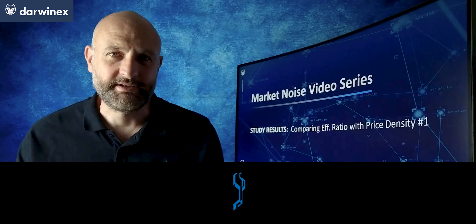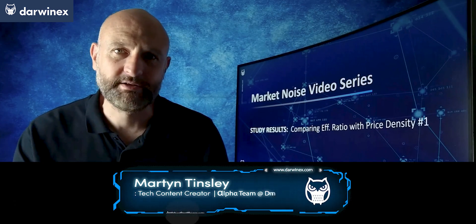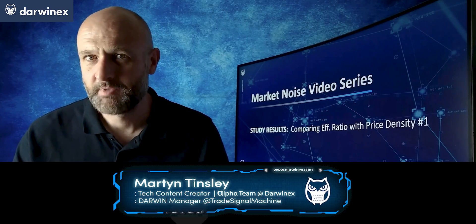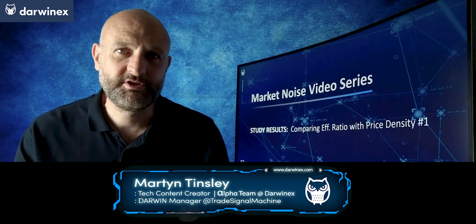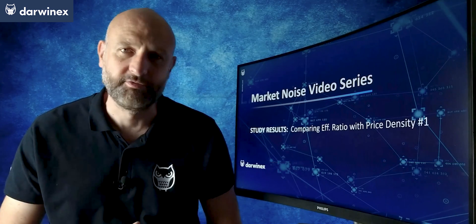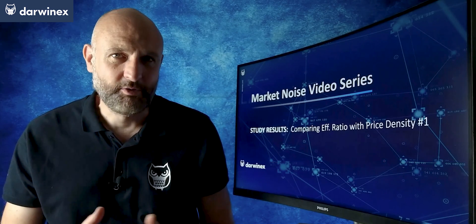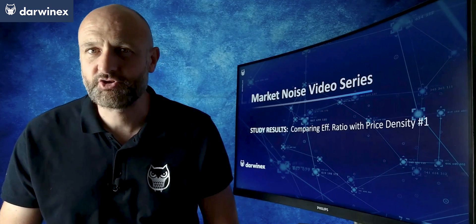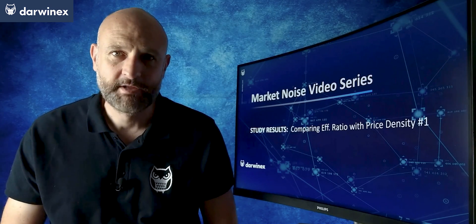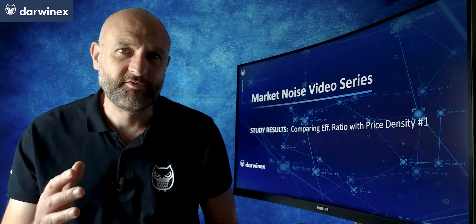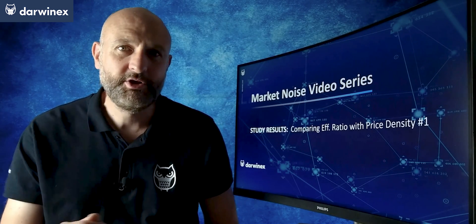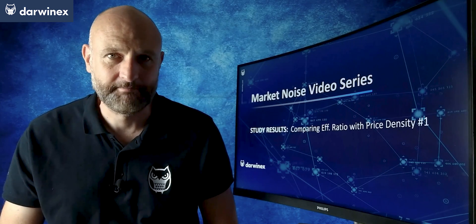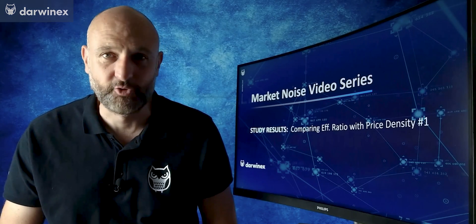Now back to today's tutorial. Price density provides an alternative way to measure noise across assets. Although the calculation is similar to the efficiency ratio, it does consider slightly different characteristics of the price action. And so how will this affect the performance of trading strategies when using it? Today I play off price density directly against the efficiency ratio using them to inform asset filtering. Let's take a look at which performs best.